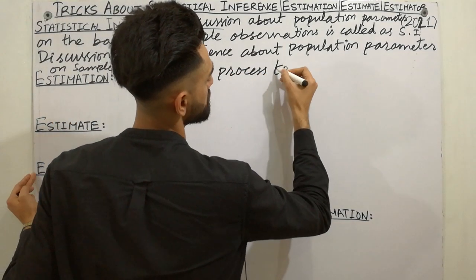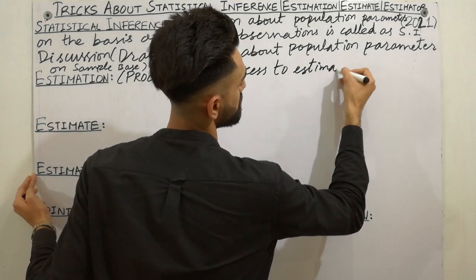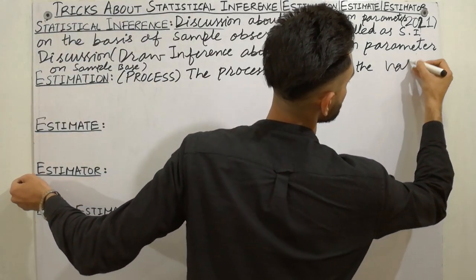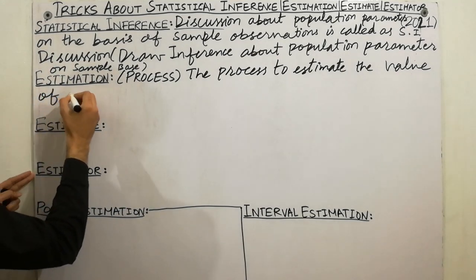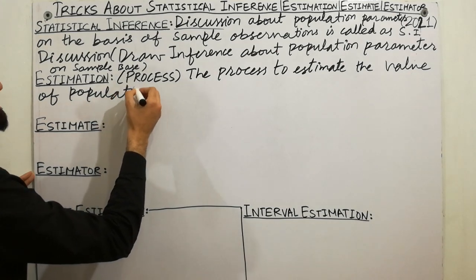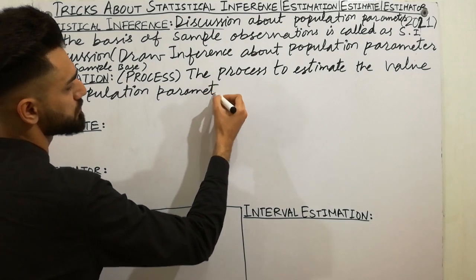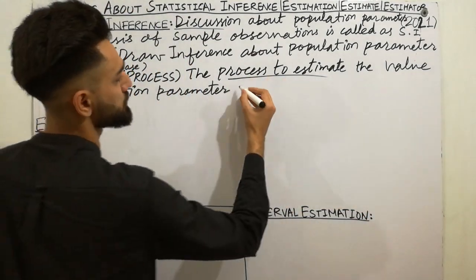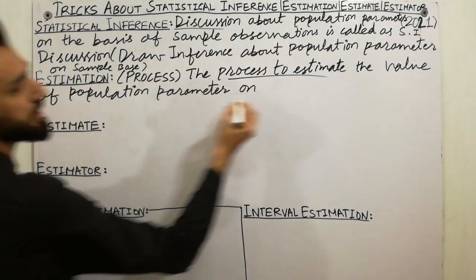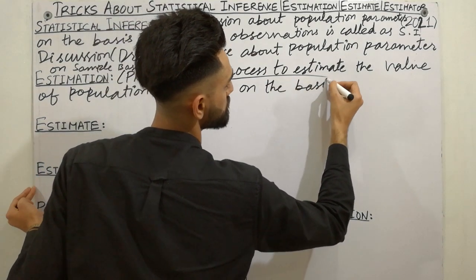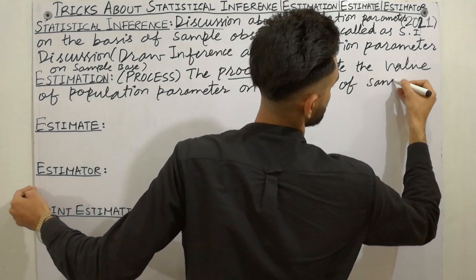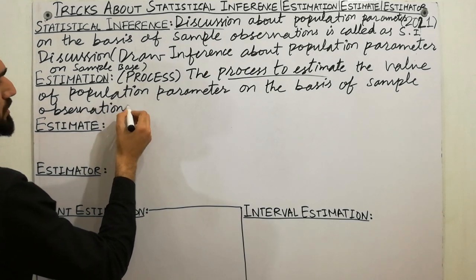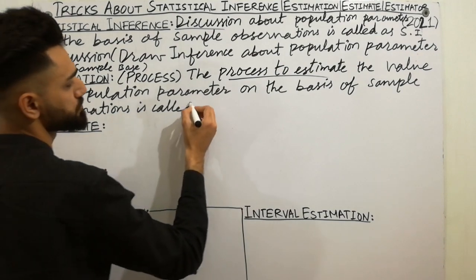So you can write the definition of estimation just like this: the process to estimate the value of population parameter on the basis of sample observations. This is defined as estimation.